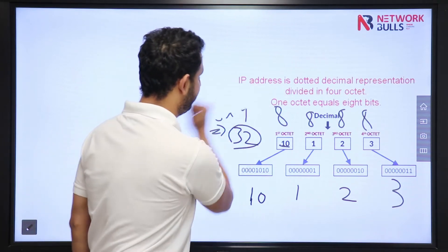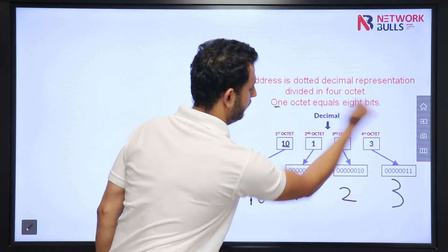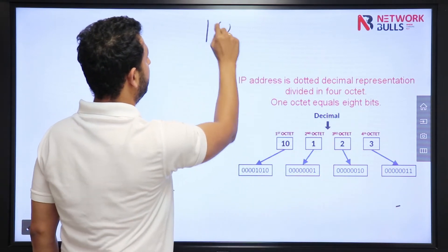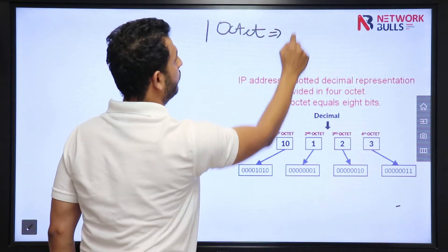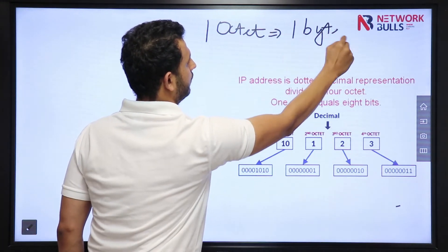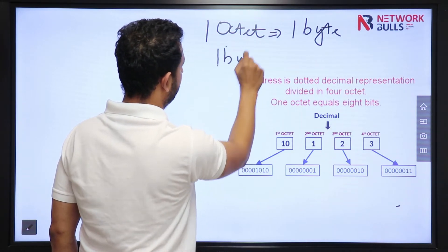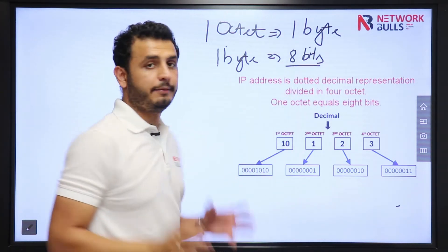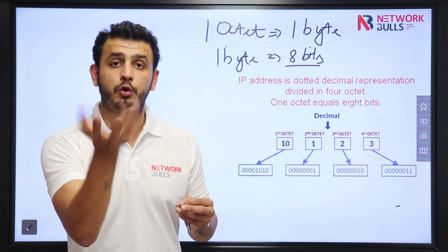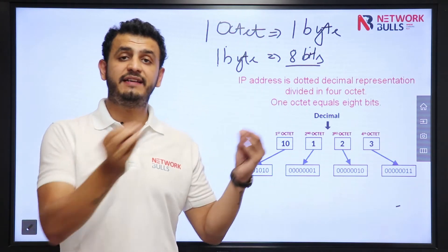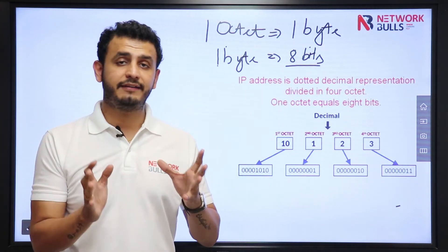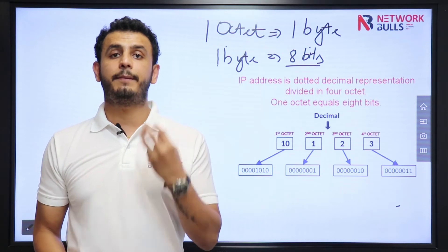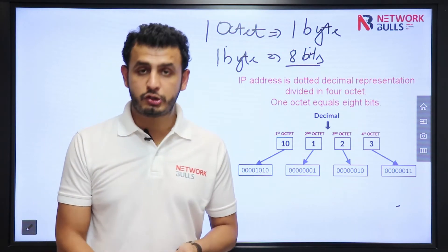Now what is the concept of bits? 1 octet equals 1 byte. 1 byte equals 8 bits. It means in an octet there will be 8 bits. Now you want to know what will be the minimum value and what will be the maximum value from these 8 bits. Bits means we are using binary. In binary there are only two things: 0 and 1. 0 means the bit is off, 1 means the bit is on. Let me show you some examples.